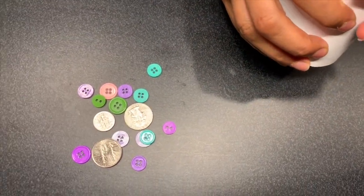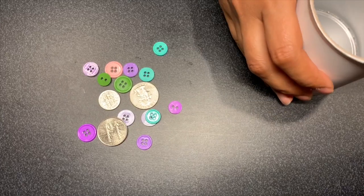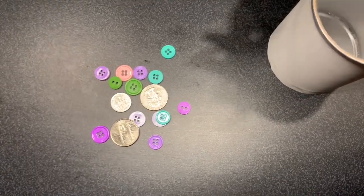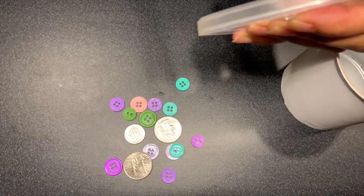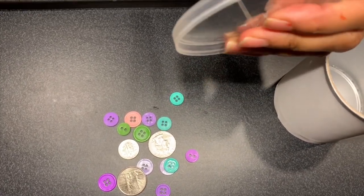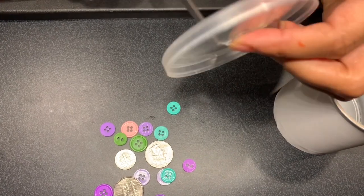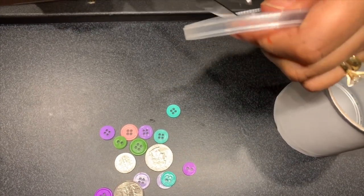We're going to use this can and convert it into a piggy bank. Be sure that when you are cutting your slit in the lid that you are being supervised by an adult or have the adult actually cut the slit for you.